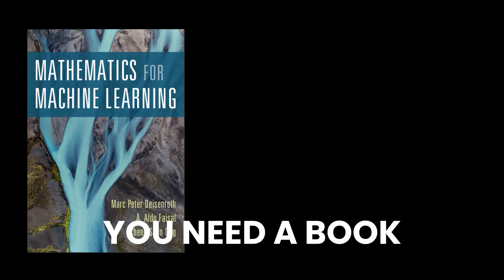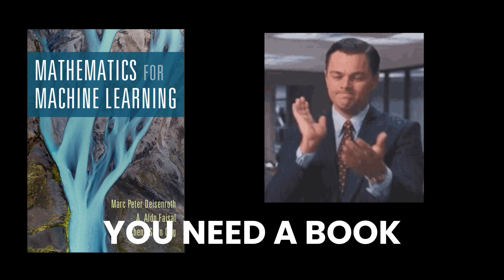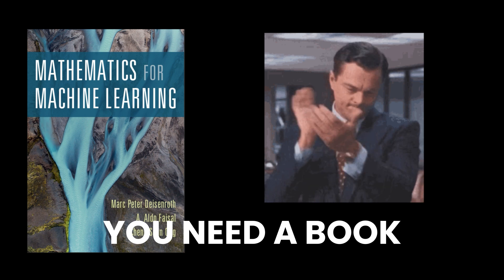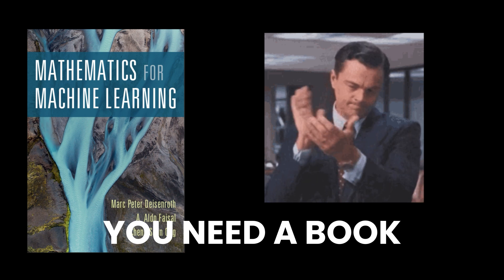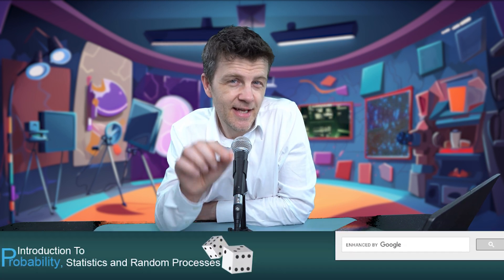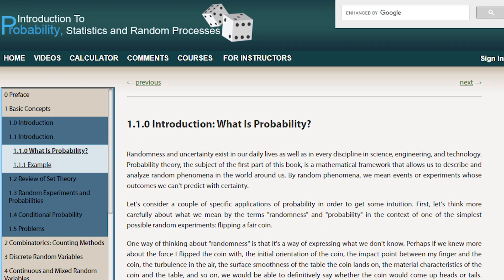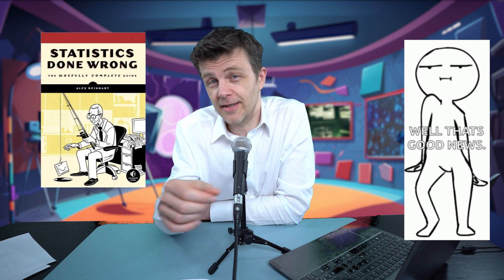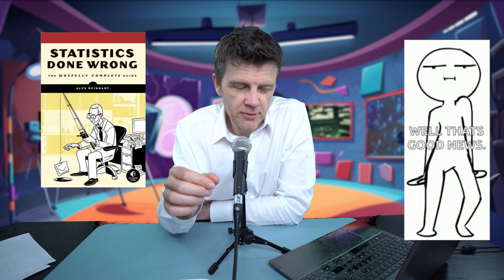If you need a book on machine learning maths, then how about Mathematics for Machine Learning? It's free and very comprehensive. And for a gentle introduction to probability and statistics, this site is superb. And Statistics Done Wrong from Alex Reinhart is full of insights into how statistics can be done wrong, and it will show you why and how you should avoid making the same mistakes.